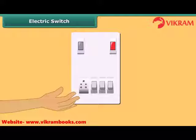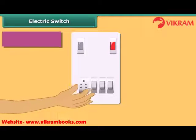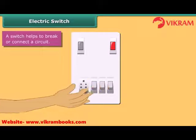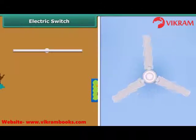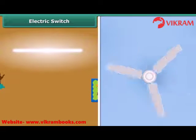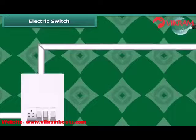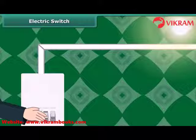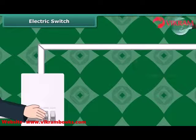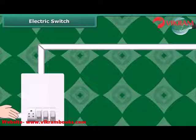We put a switch on or off whenever we want to use or not use an electric appliance, such as a fluorescent tube, fan, or AC. A switch for a bulb is pressed down to complete a circuit and the bulb glows. To put the bulb off, we press the switch up. This breaks the circuit and the bulb glows no more.